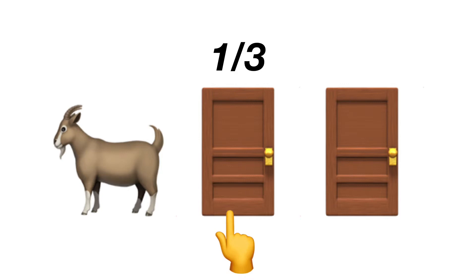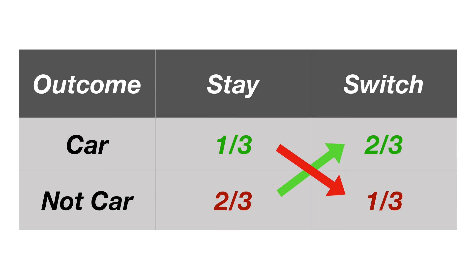However, the game show gives you a chance at redemption by giving you a chance at switching to the only other door and removing the only other outcome. Mathematically, if your chance of claiming the car is one-third with one option, then the only other option is two-thirds, because the probability that the car is in one of the doors is 100%. One minus one-third equals two-thirds.